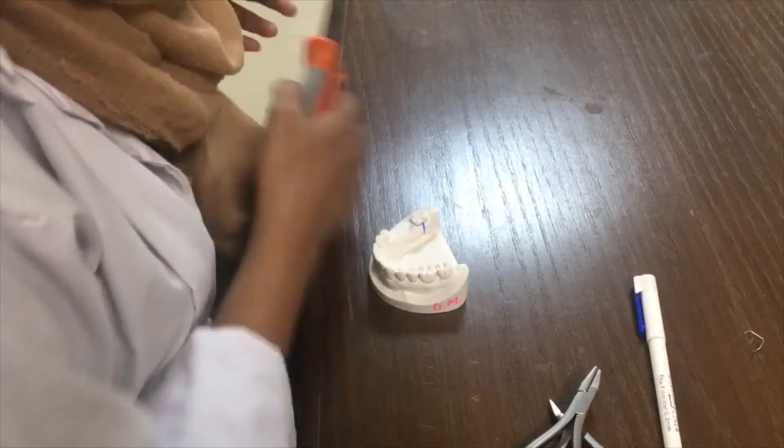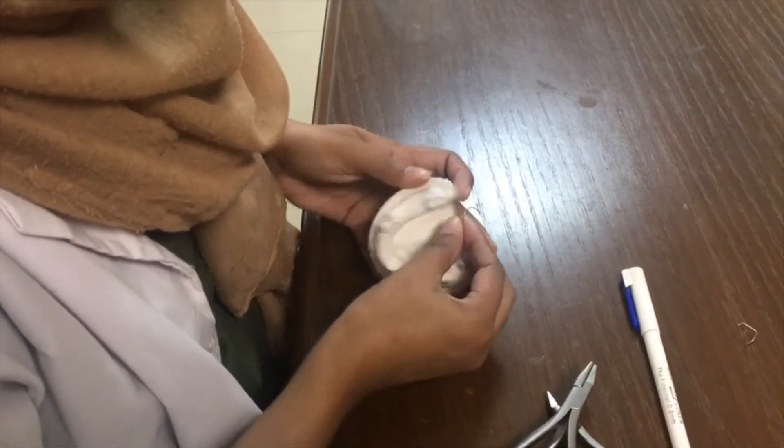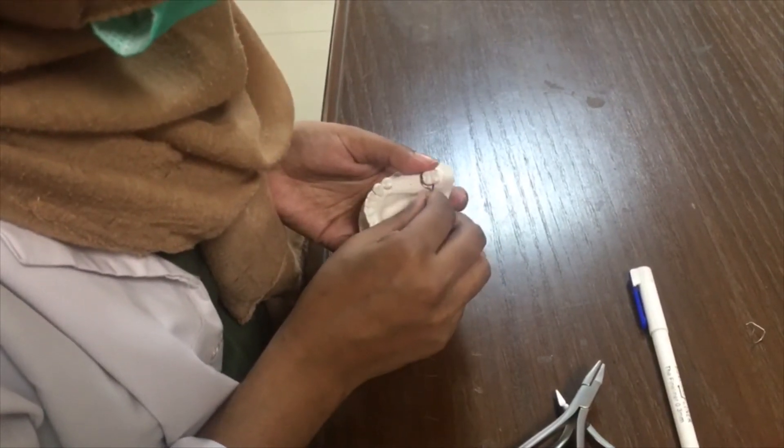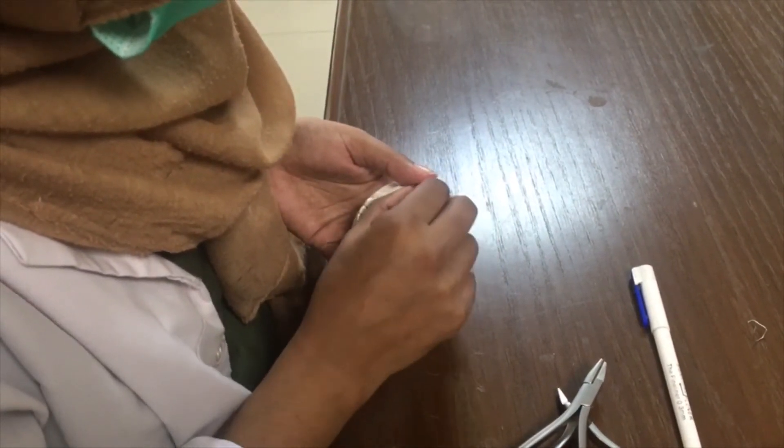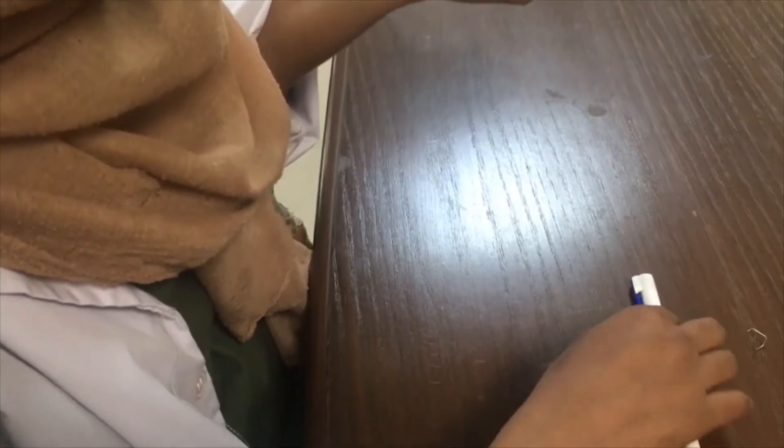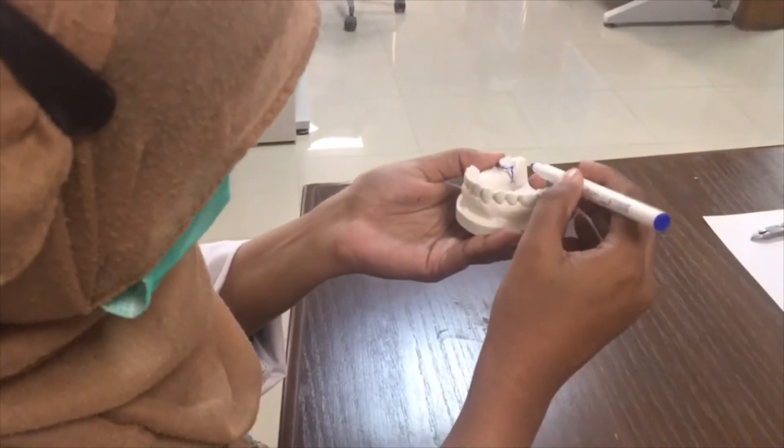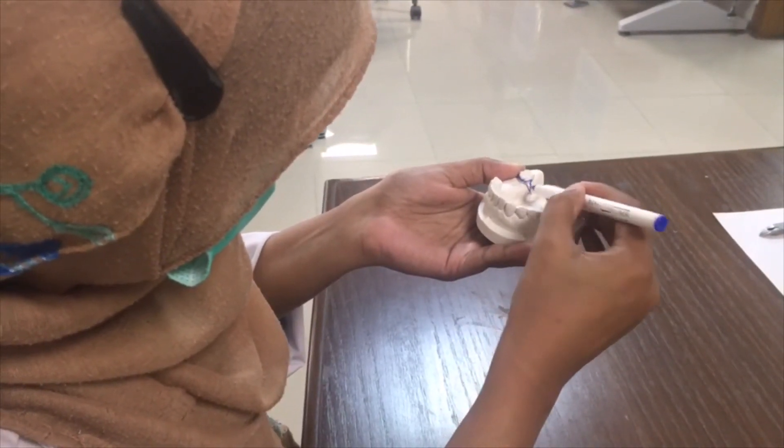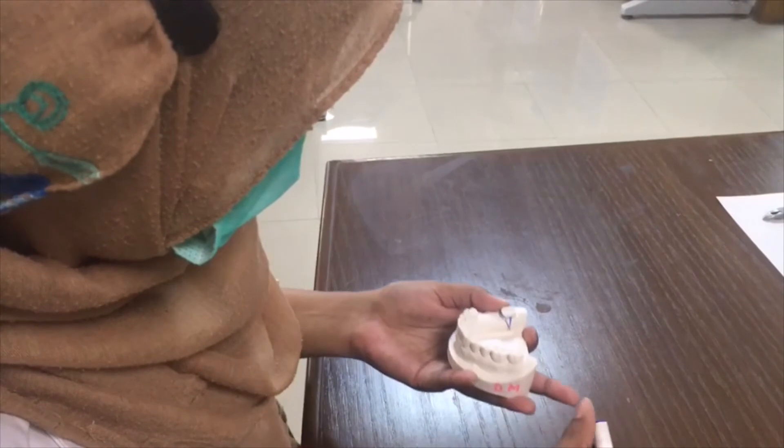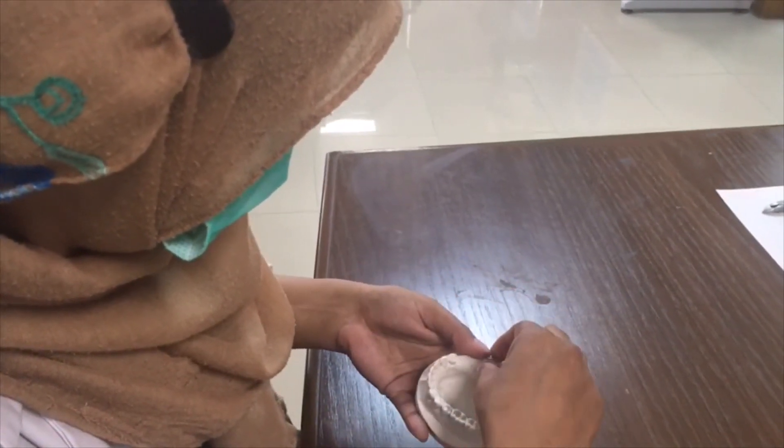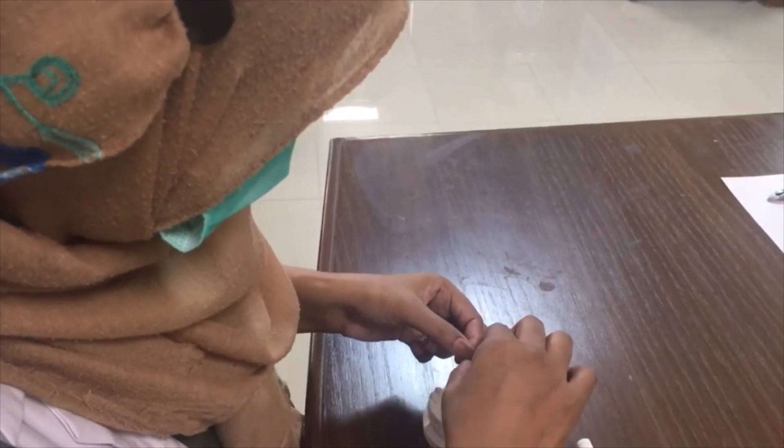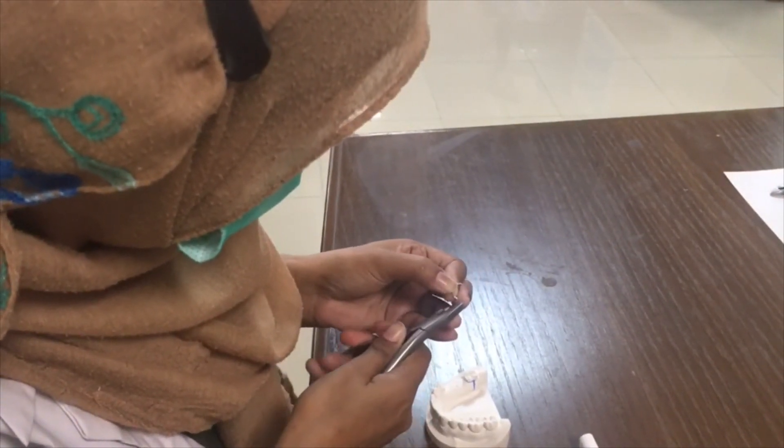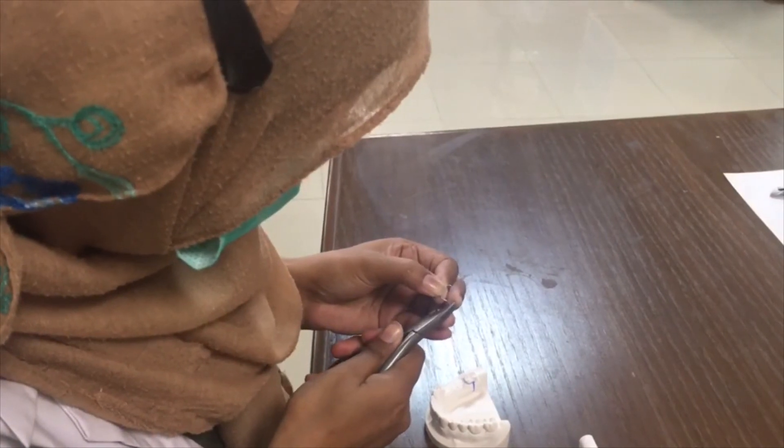You can cut any excess wire if it's coming in your way and then you can proceed again with the adaptation of the wire on the surface of the tooth. Keep on checking if you are bending it the right way and if it's being adapted properly or not.